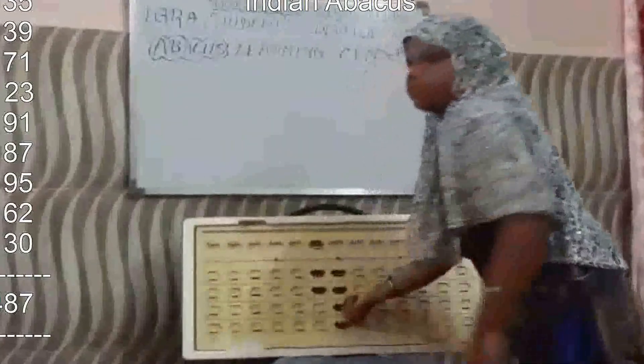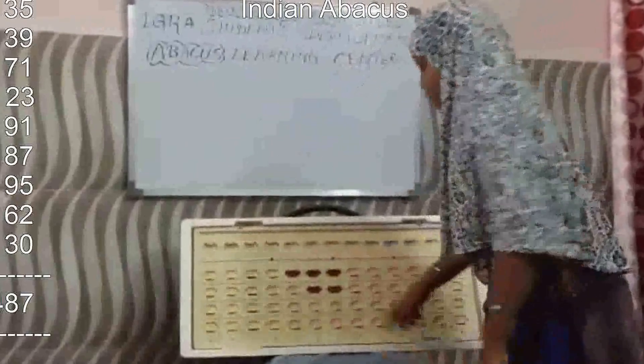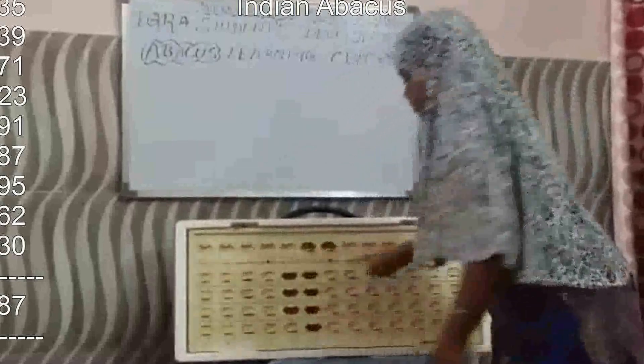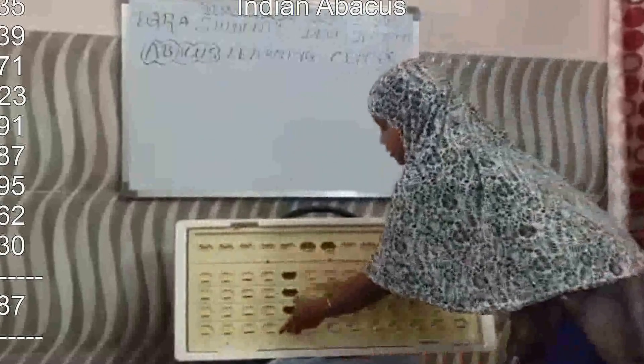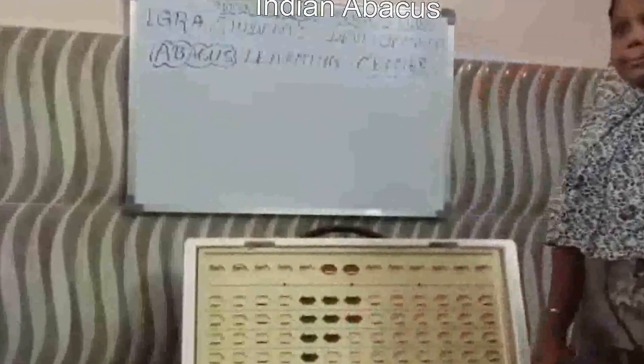71, minus 23. 91, 87, 95, 62, 50. That is 487. Character answer.